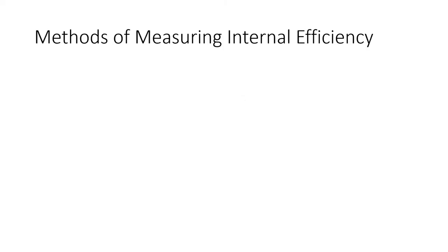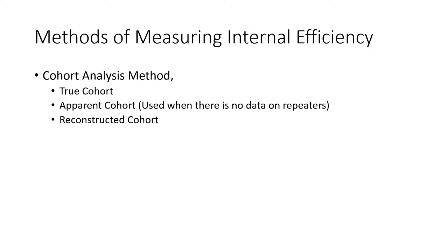Internal efficiency is measured using different methods. One method is the cohort analysis method, which has three approaches: the true cohort analysis method, the apparent cohort method, and the reconstructed cohort method.